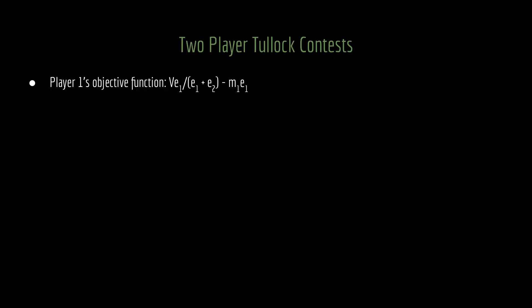The second way I want to solve this is an asymmetric competition between two players. Here we have player 1's objective function as the value of the good v times the contest success function, which is E1 divided by E1 plus E2. And then you subtract out player 1's cost, which is that effort level times its marginal cost.